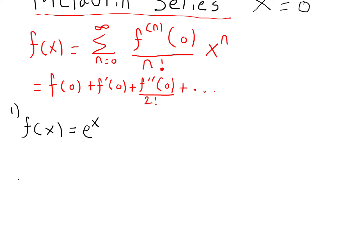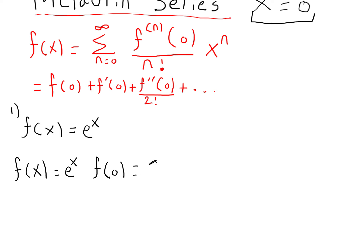The first thing you want to do is set up a chart method. On your left, put your function f(x) and write e^x. To the right, evaluate it at f(0). The reason we evaluate at zero is because x is equal to zero in the case of a Maclaurin series. If you plug e^0 into your calculator, you're going to get 1.